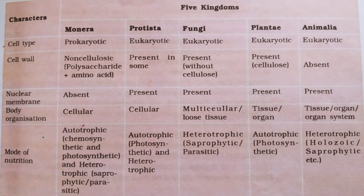The characteristics of the 5 kingdoms are depicted here. The first kingdom is Kingdom Monera. The characters considered are cell type, cell wall, nuclear membrane, body organization, and mode of nutrition. In Kingdom Monera, the cell type is prokaryotic. The cell wall is non-cellulosic and is made up of polysaccharides and amino acids. Nuclear membranes are absent, and body organization is cellular. Mode of nutrition is autotrophic and heterotrophic.